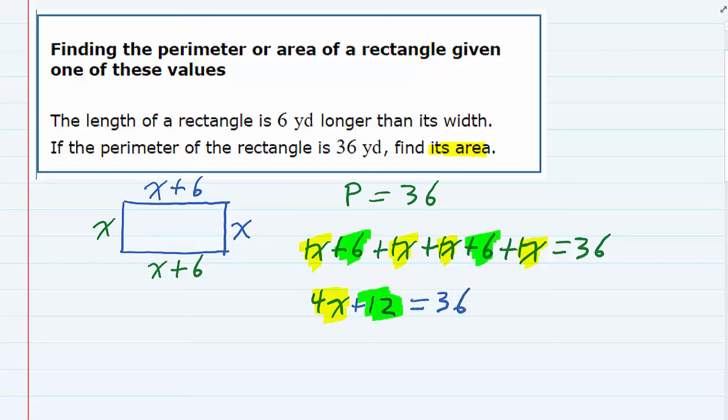So solving this for x, I just need to get the x by itself. I'm going to subtract that 12 over to the other side. That will cancel on the left-hand side, leaving me with just a 4x.